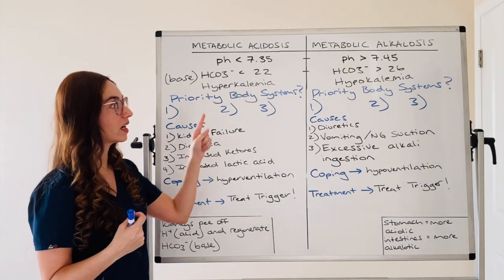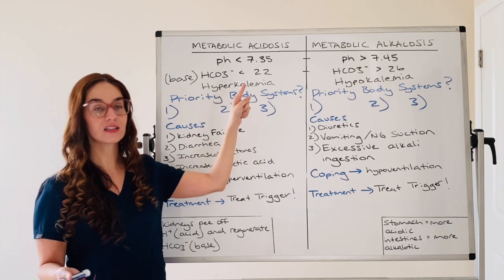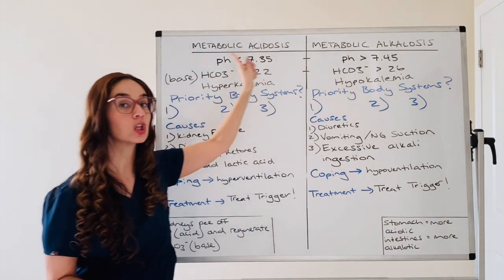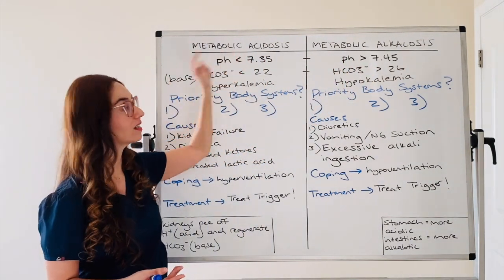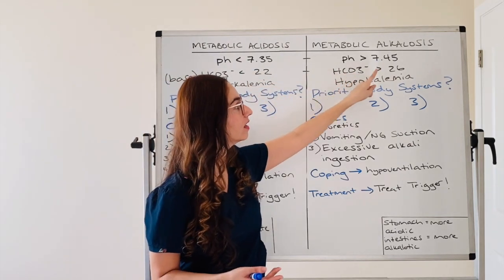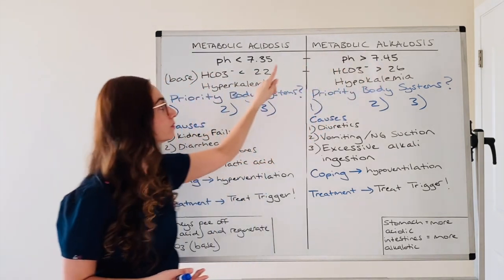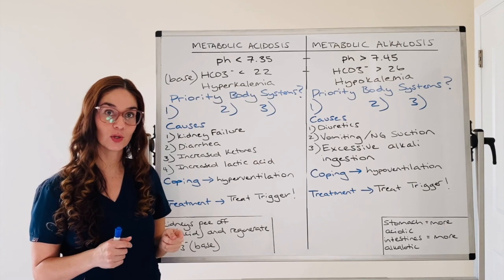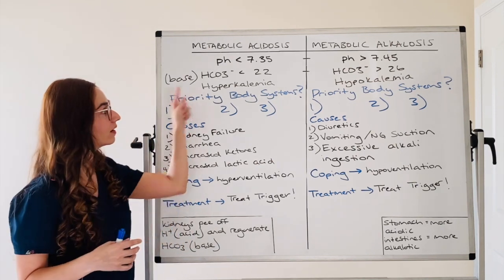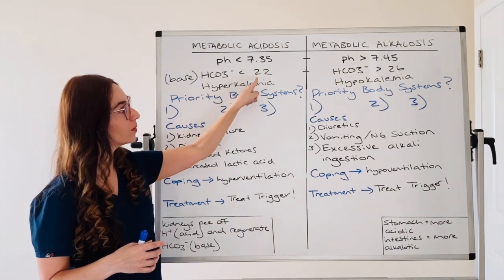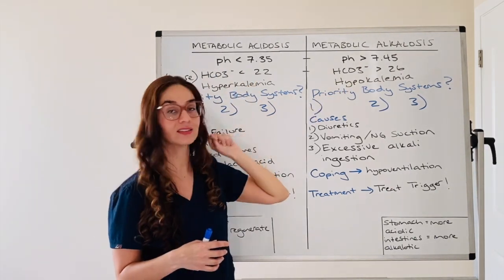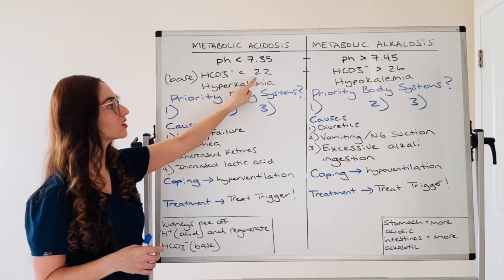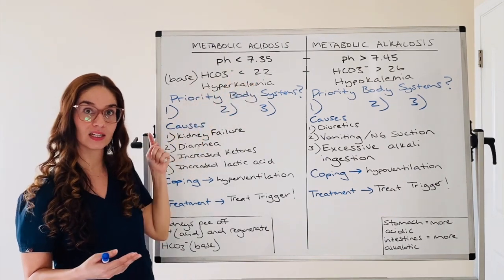With metabolic disorders, we have to focus on the pH. We know our normal pH is 7.35 to 7.45. The lower the pH gets, the more acidic the patient is. The higher the pH gets, the more alkalotic the patient is. So for metabolic acidosis, the patient is getting acidic, so the pH will be less than 7.35. And we're going to focus on bicarb. Bicarb is a base — normal bicarb levels are 22 to 26. If we're in an acidic state, we have lost our base, so the base is low in metabolic acidosis.